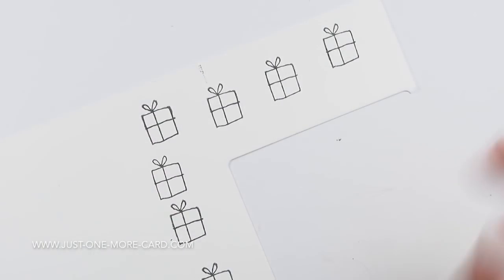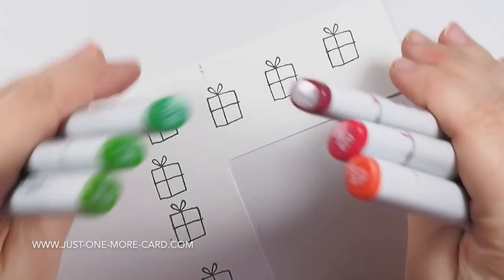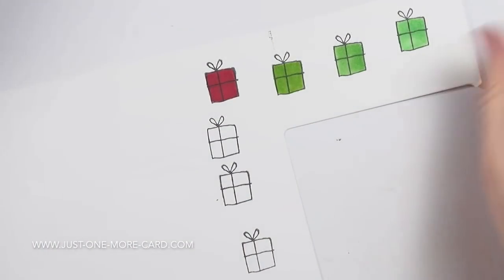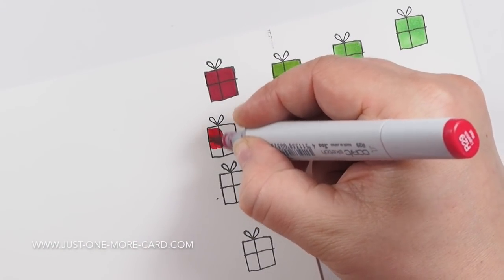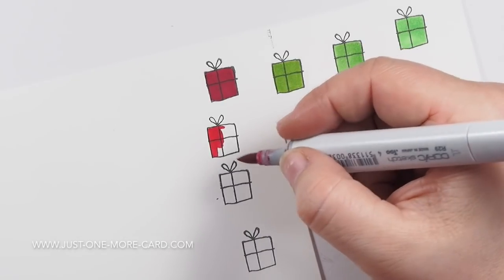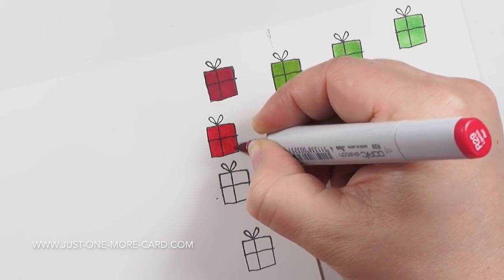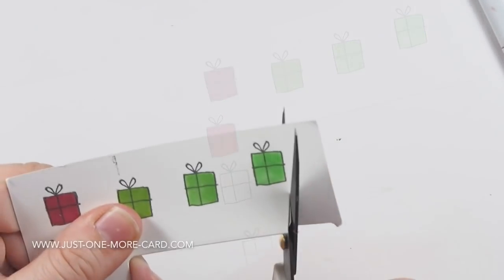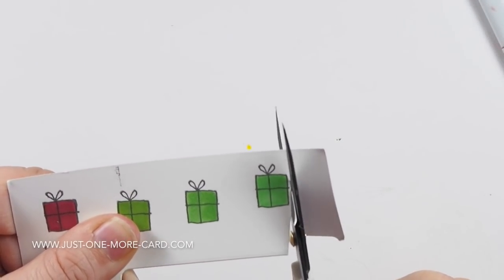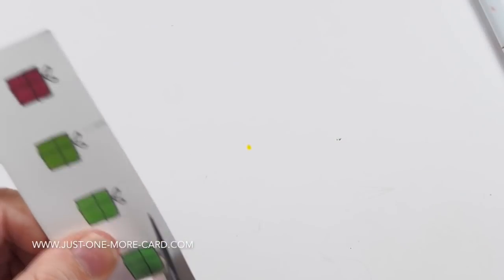You can see here I stamped the gift boxes a few times and I'm just going to use different shades of green and red to color this in. I'm not doing any shading at all here. So if you're hesitant to use your markers or whatever coloring medium you use, just a simple color and I'll show you how you can enhance it.